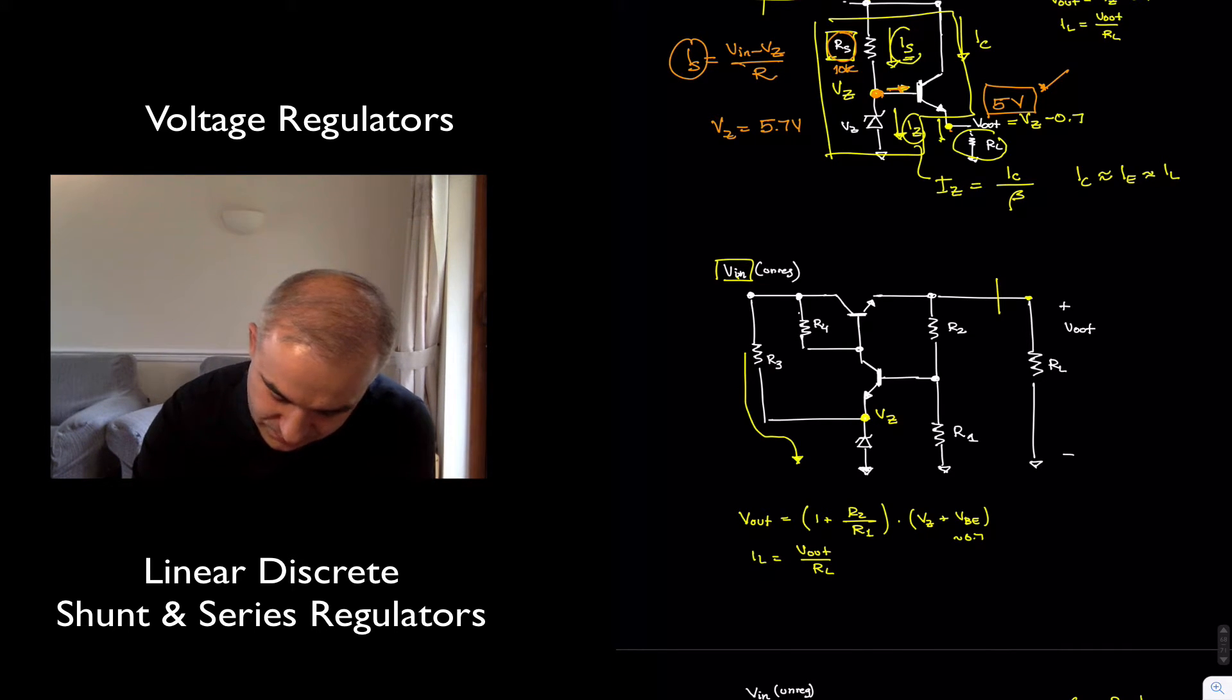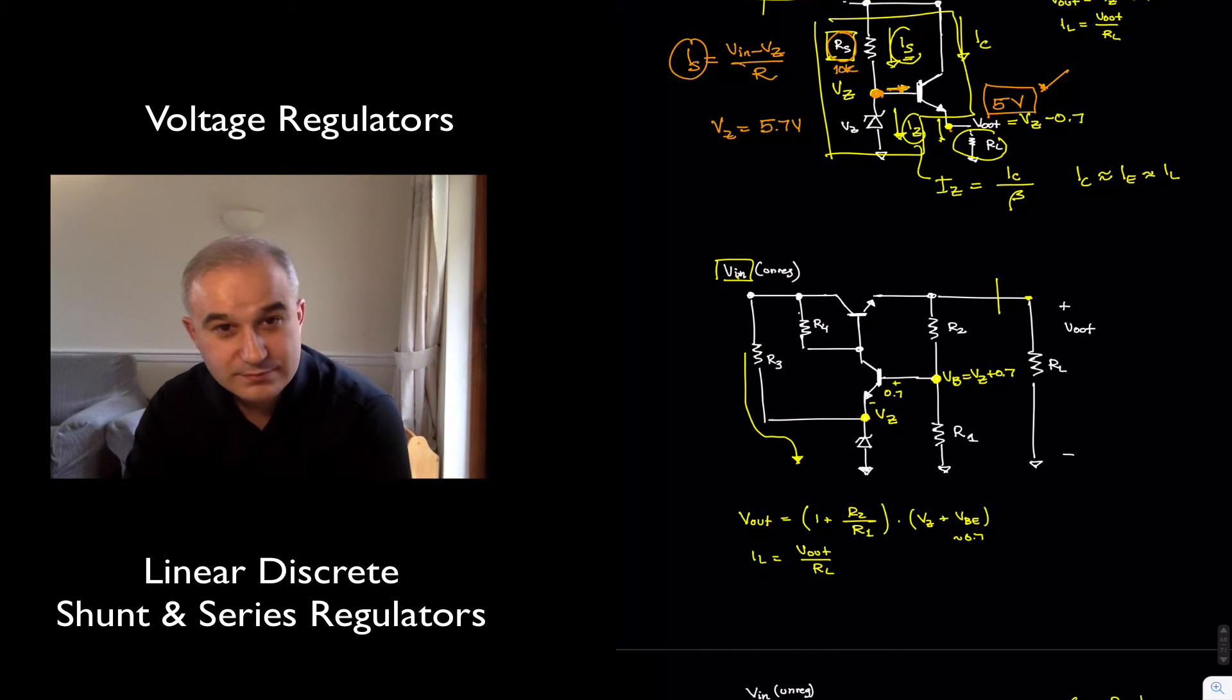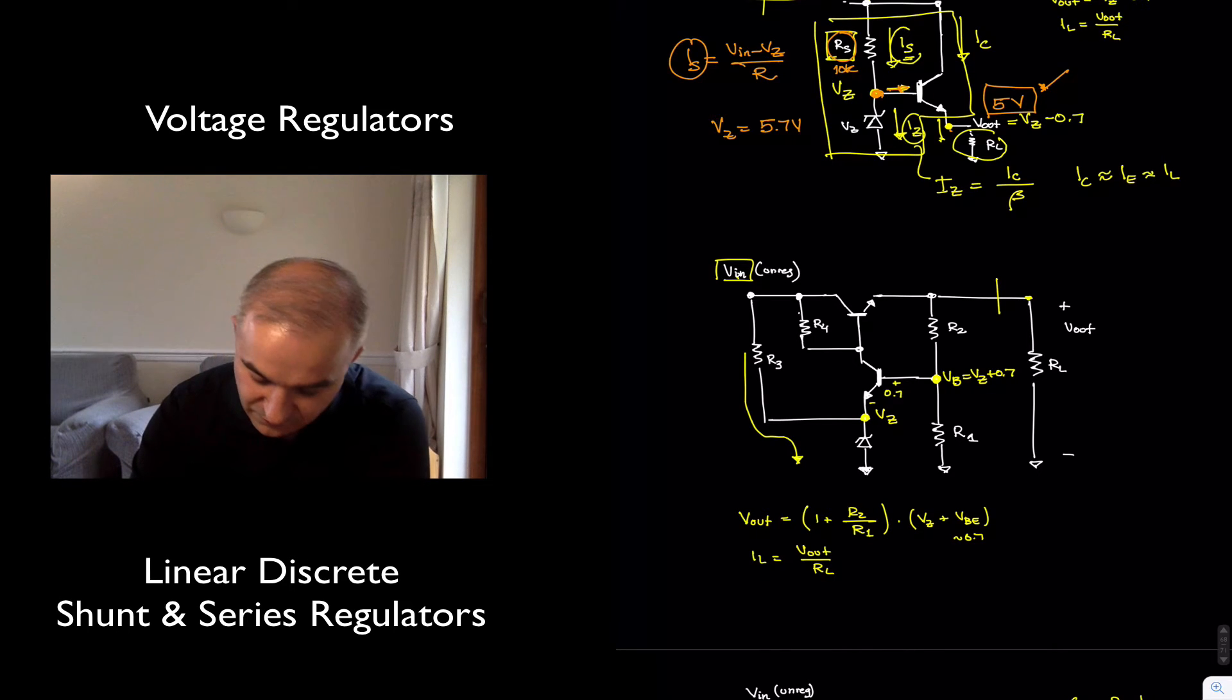So we know the voltage here. If this transistor is in the active region, we know that the voltage base-emitter is going to be approximately 0.7 volts. So we know that here, the base is equal to the Zener voltage plus 0.7. Now, if we know the voltage at the base, we can find the voltage at the output.